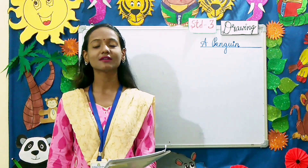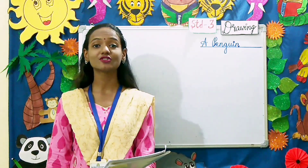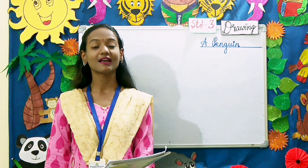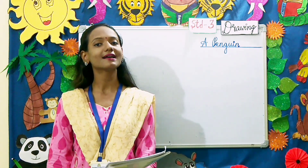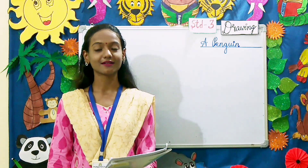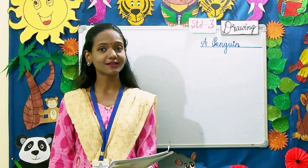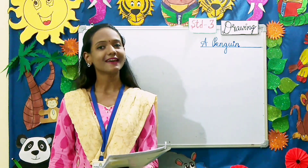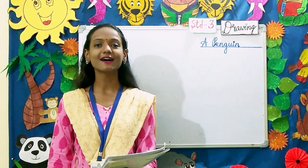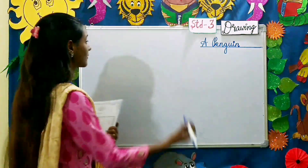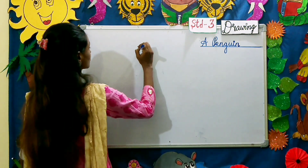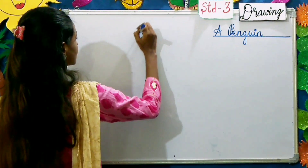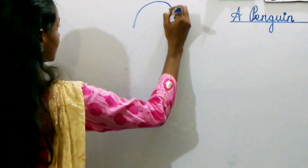Children, our first topic is a flightless bird that is found in Antarctica. Can you guess it? Yes, it's a penguin. Our first step is to draw a semicircle.